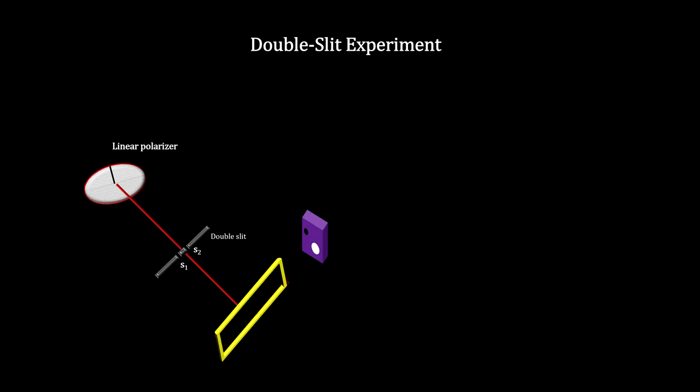The double slit experiment with photons helps illustrate how this linear superposition works. As light flows through the process, we'll keep track of the quantum state of the photons.